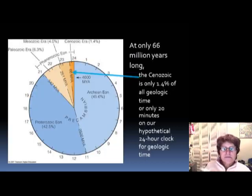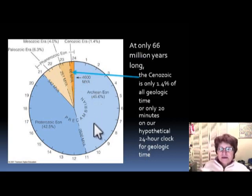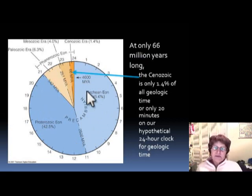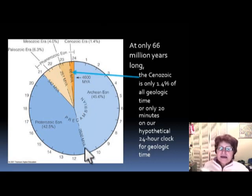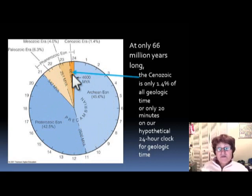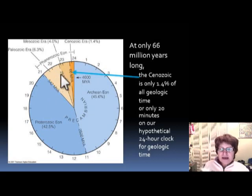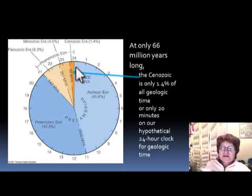The Cenozoic basically covers the last 66 million years of Earth history. This picture represents the whole Earth history — all 4.6 billion years. Most of that history is the Archean and the Proterozoic. The light blue is the Archean and the darker blue is the Proterozoic, totaling about 4.1 billion years. The brown area shows the last 540 million years, which is the Phanerozoic, and the darkest brown is the last 66 million years — the Cenozoic.